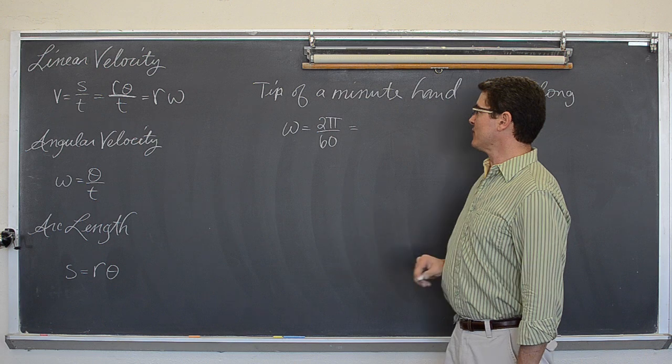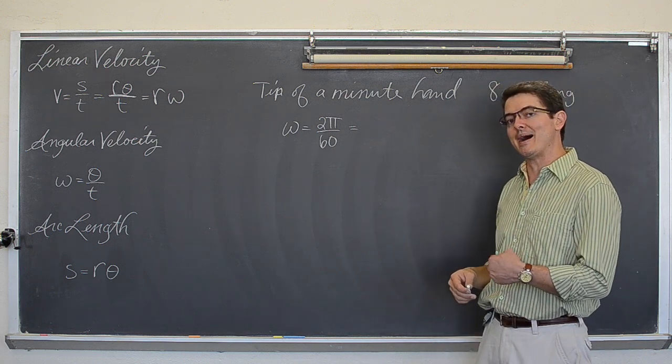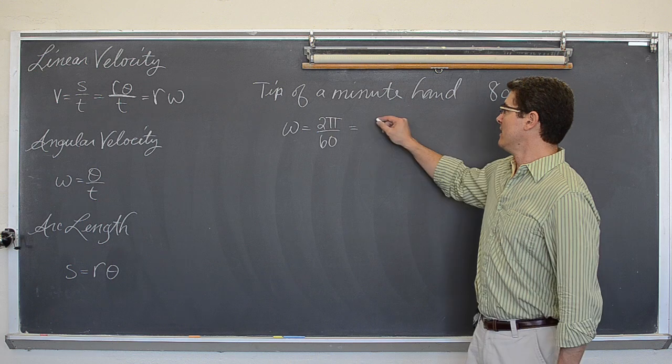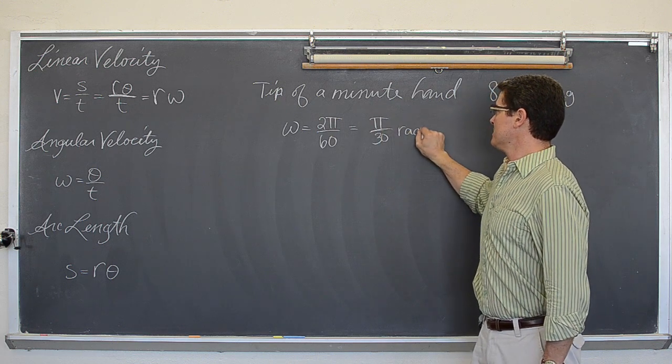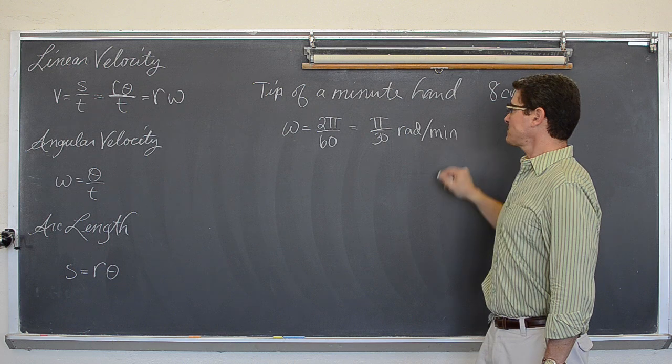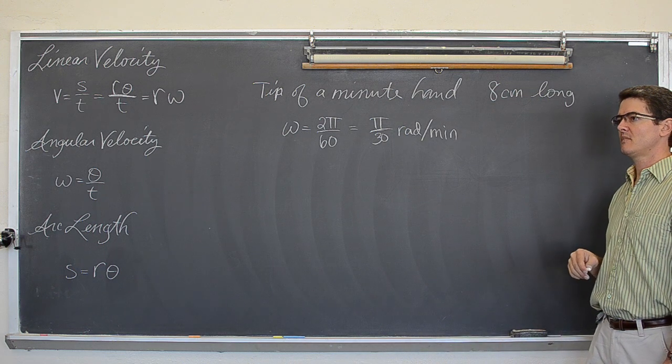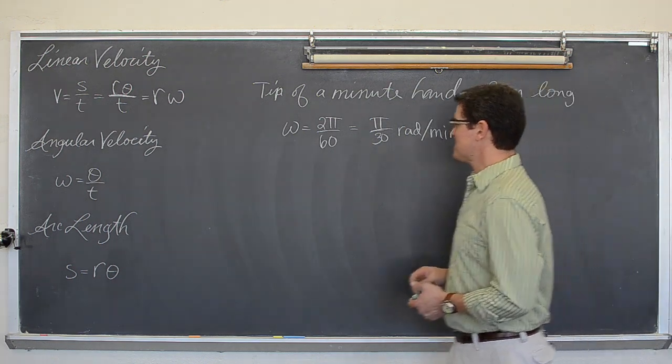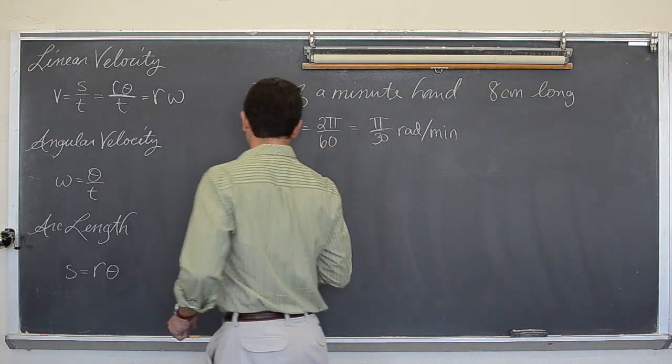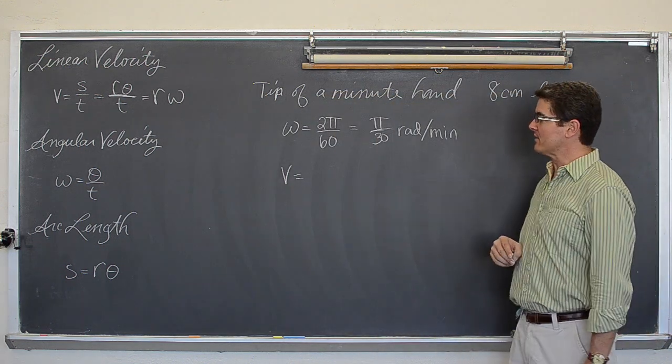So the angular velocity of a minute hand based on, we are going to do this by minute, not by hour, is π over 30 radians per minute. Yes. Okay, just space it out there a little bit.